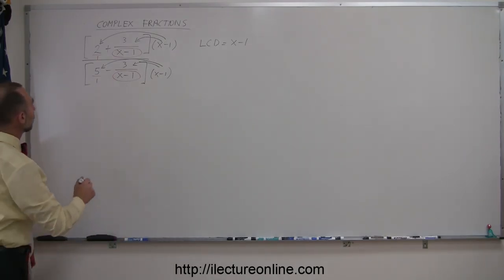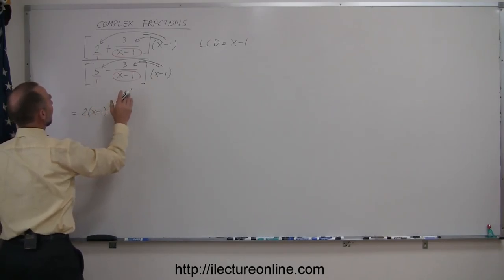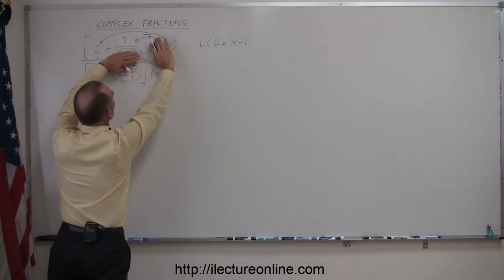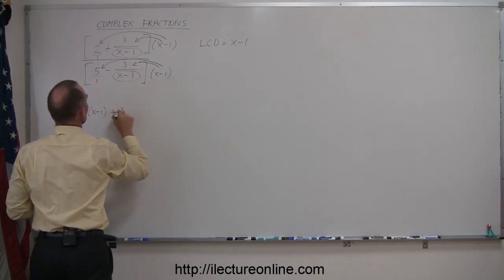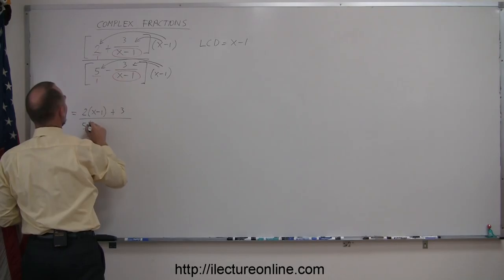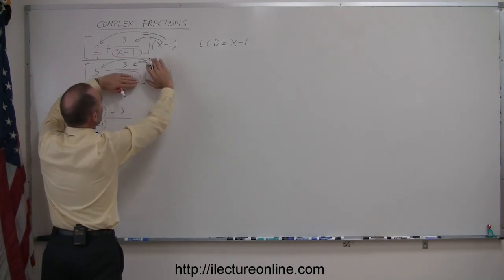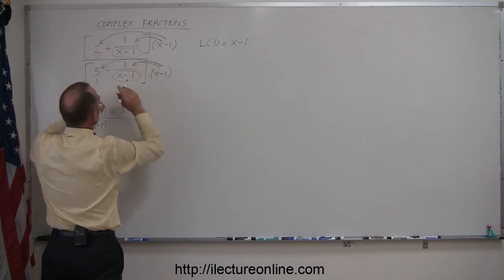In the numerator we get two times x minus one, and we multiply this times this. Notice that the denominators will cancel out and I'm left with a plus three. In the denominator, when I multiply this times this I get five times x minus one, and when I multiply this times this, remember that those will cancel out, I'm left with a minus three.